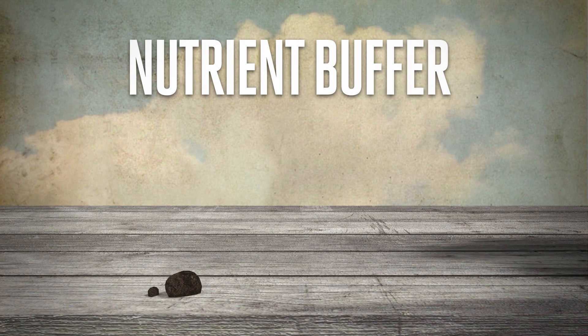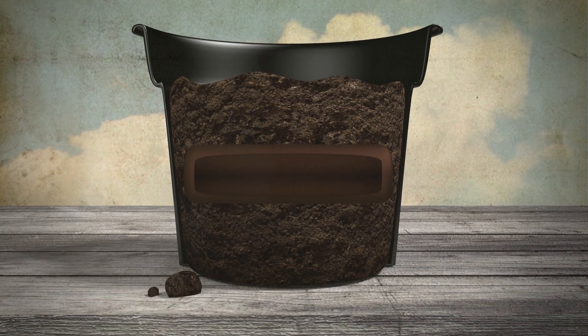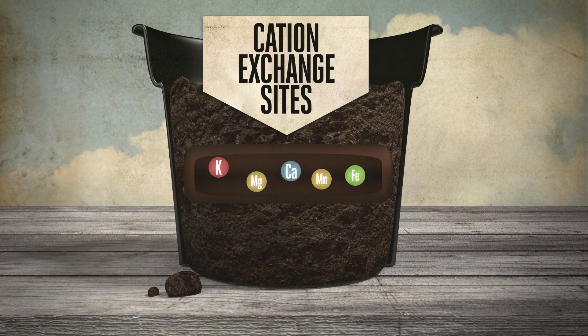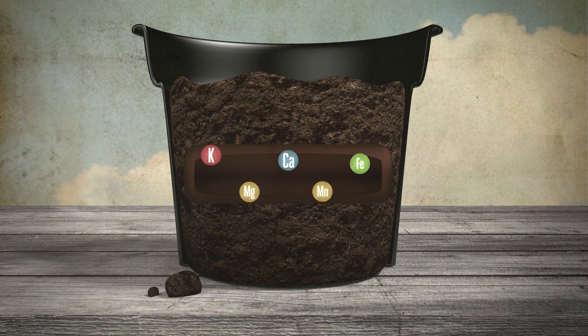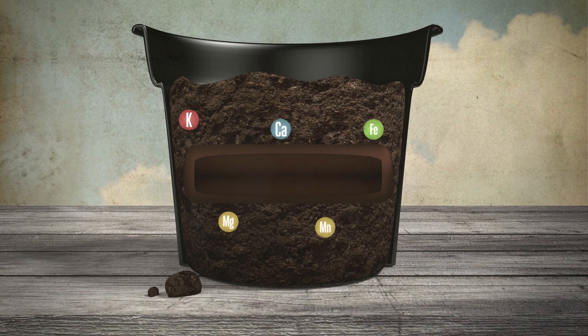Then we have the nutrient buffer. Substrates containing peat or mineral soil bind nutrients to the fibres or particles using charged sites known as cation exchange sites. The nutrients will later be released into the solution around the fibres in the soil. This mechanism is called slow release or equilibrium. All elements can be made available for the plant in a specific ratio.